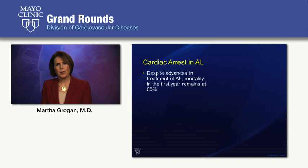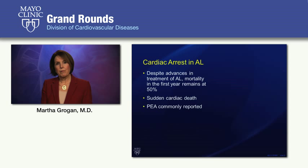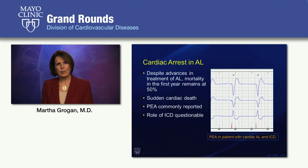Regarding cardiac arrest in amyloidosis: especially in patients with AL type, mortality within the first year remains at 50% despite advances in treatment, and the vast majority of these deaths are due to sudden cardiac death. Interestingly, these are often due to pulseless electrical activity. Some patients have been successfully resuscitated from malignant ventricular arrhythmias, and some have sudden death due to bradyarrhythmias, but increasingly these patients are dying from pulseless electrical activity, making the role of ICD really questionable and debatable.